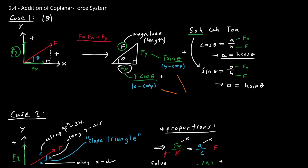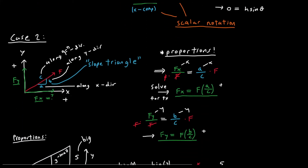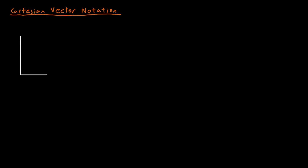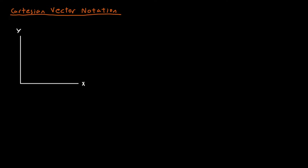The rectangular components we found are in scalar notation, and that is the same for both cases. Now that we know how to write rectangular components in scalar notation, we can introduce Cartesian vector notation. In Cartesian form, we use the directions i and j, which are unit vectors having a magnitude of 1. The direction of j is along y and i is along x.